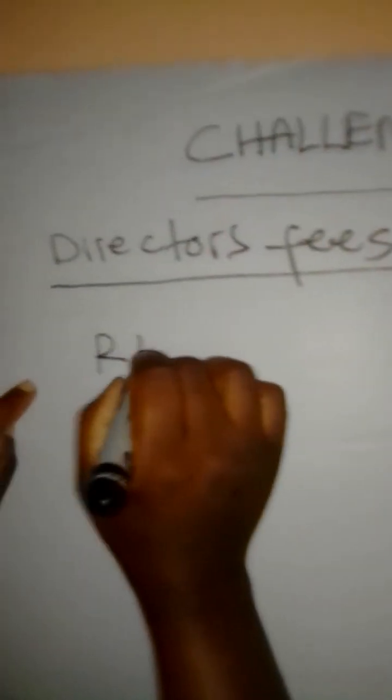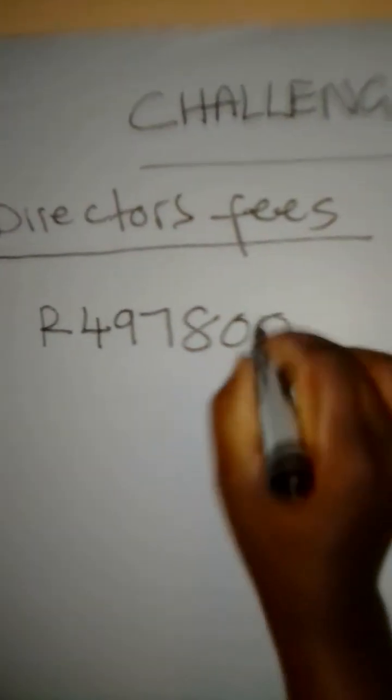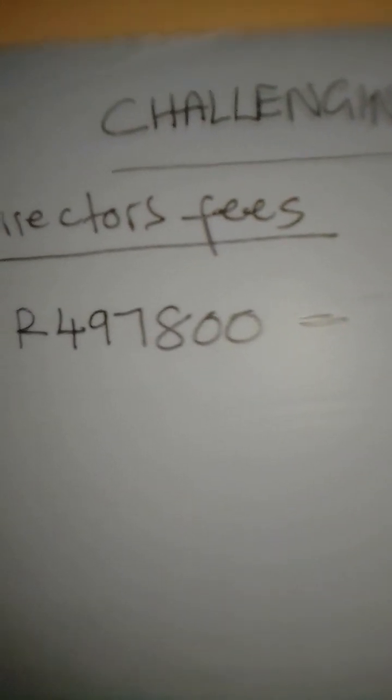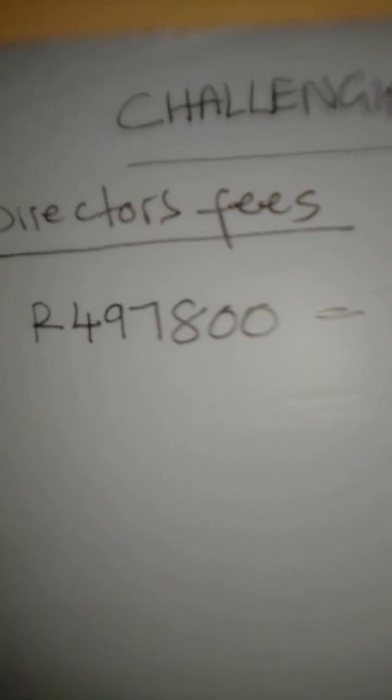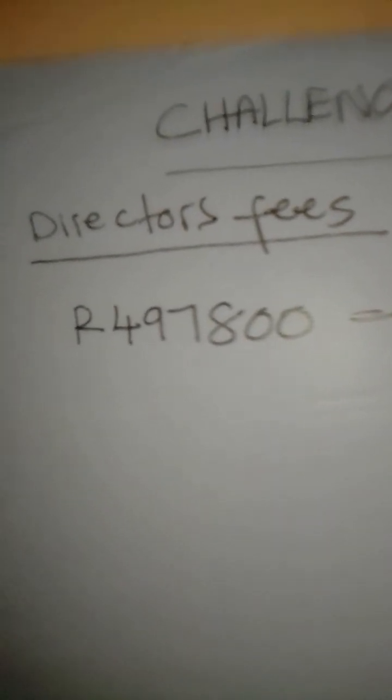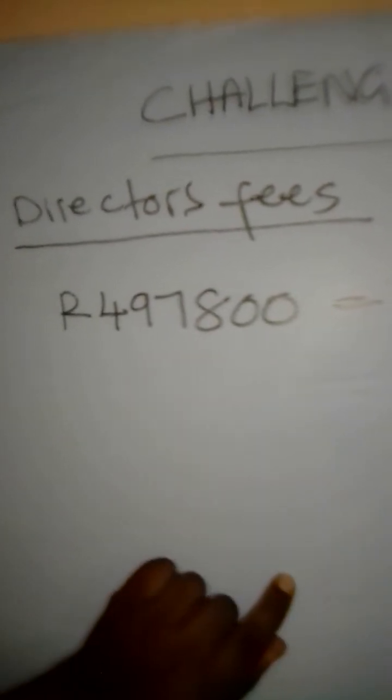So the director's fees that are given for the three directors is $497,800. So in other words, I'm going to say is equal to money for how many months? There are three directors. This money is per director per year. So how many months are there in a year? There are 12 months. So I'm going to say three directors multiplied by 12 months. It is going to give me how many months? 36 months.